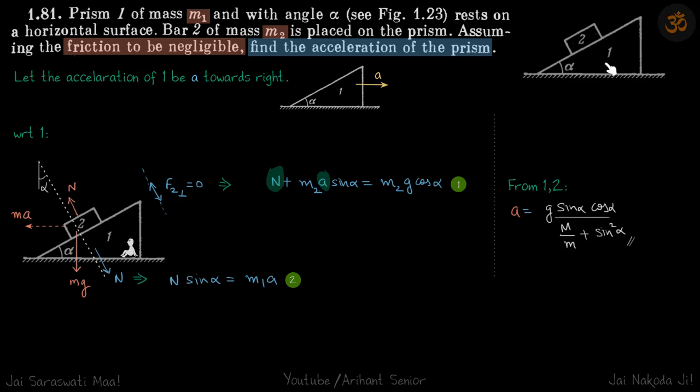Because of the normal reaction on prism 1, its acceleration will be towards right. Let's assume that acceleration to be a. Now because we have block 2 sliding on the surface, let's observe this motion with respect to 1. Since the acceleration of 1 is towards right with a, we will have a pseudo force on 2 towards left which is M2 times a.